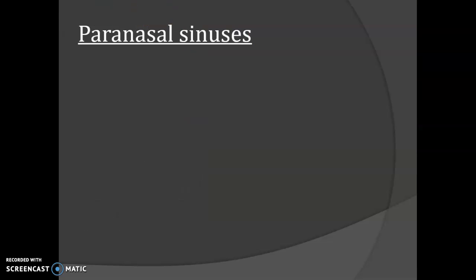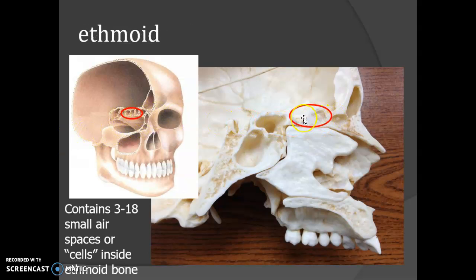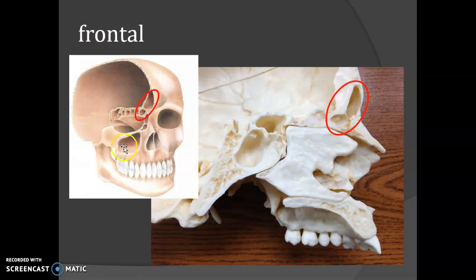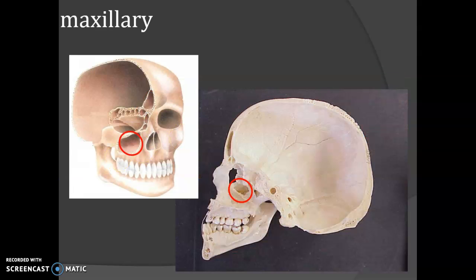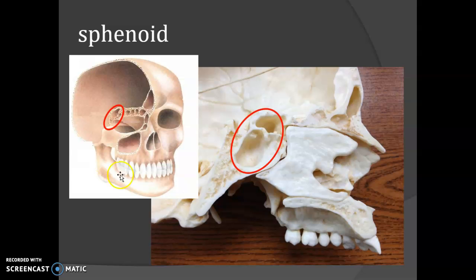Then we have the paranasal sinuses. First we have the ethmoid bone — remember the sinuses are structures filled with air in order to diminish the weight of the head and to work as voice resonance chambers. Here you have these cells filled with air in the ethmoid bone. Then you have the frontal bone with the same features — the sinuses. Then you have another for the maxillary bones, and finally some from the sphenoid bone.